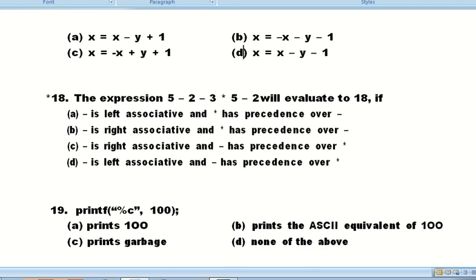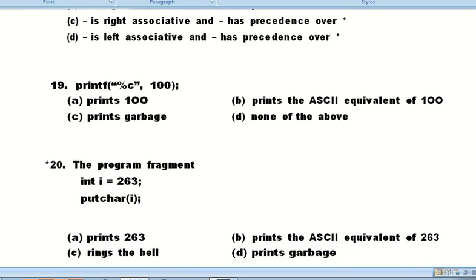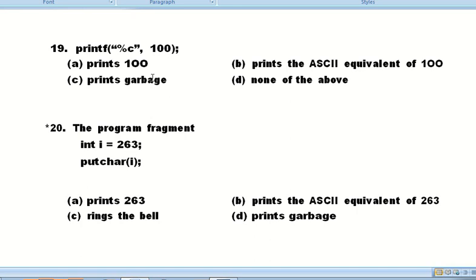Question number eighteen: The expression 5 - 2 - 3 - first 5 minus 2 will be evaluated. Minus has right associativity and higher precedence over multiplication. Option C is correct.